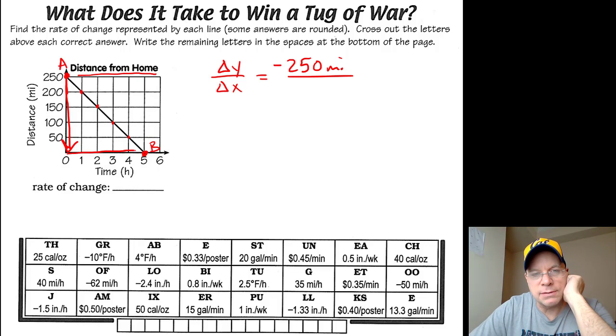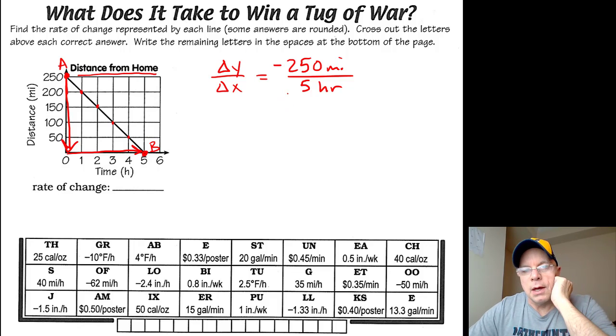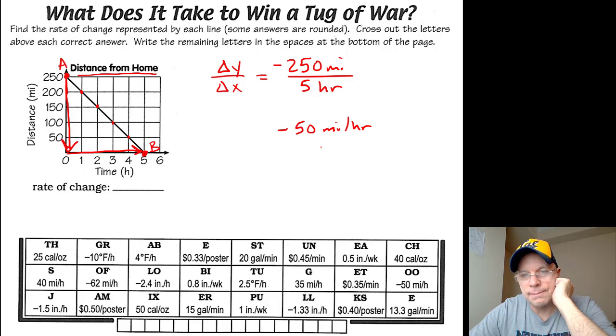And then 250 divided by five is 50, and negative divided by positive is negative. So this is negative 50 miles per hour. And let's think about what that means.